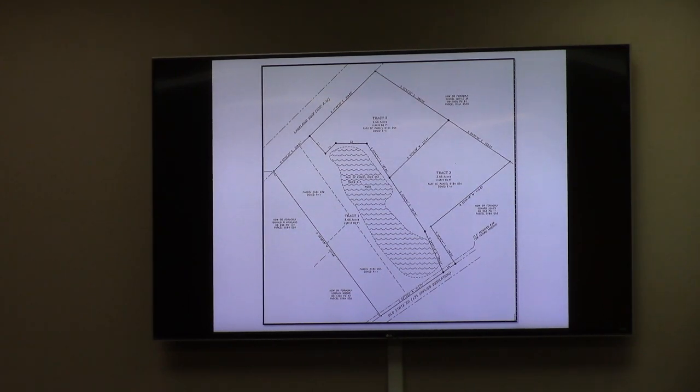The property is in the rural service area, agricultural character area as stated. It does have frontage on Lakeland Highway and Old State Road. Lakeland Highway being a state route, Old State Road being a county-maintained dirt road. Overall, staff finds the request consistent with the comprehensive plan and has no additional objectionable comments.